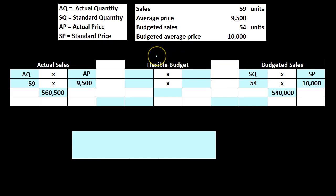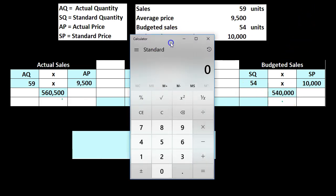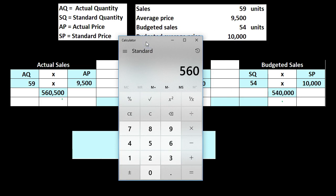Now we're going to compare that to the middle item. The middle item is going to be the actual quantity of 59 units times the standard price of $10,000, which gives us $590,000. We see that $560,500 minus $540,000 gives us the total difference — the normal kind of budget total difference — of the $20,500 we have seen before.